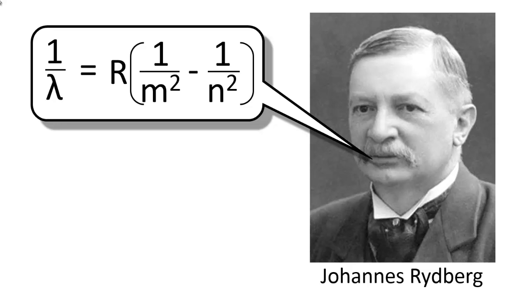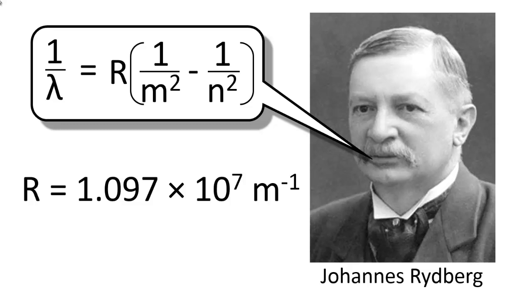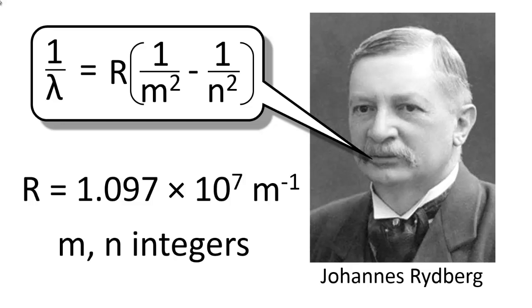1 over the wavelength is equal to R, which is the Rydberg constant, 1.097 times 10 to the seventh inverse meters, times the quantity of 1 over m squared minus 1 over n squared, where m and n are integers.